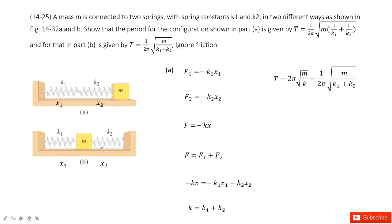In this case, F1 equals negative k1x1, the elastic force for spring 1. The elastic force for spring 2, F2, equals negative k2x2. Then the total force is negative kx.